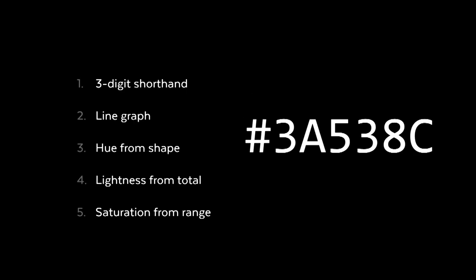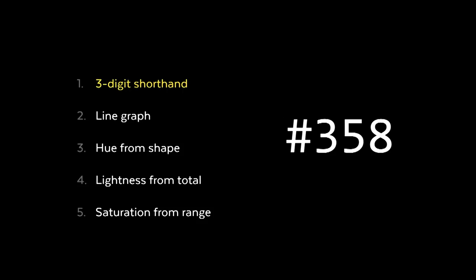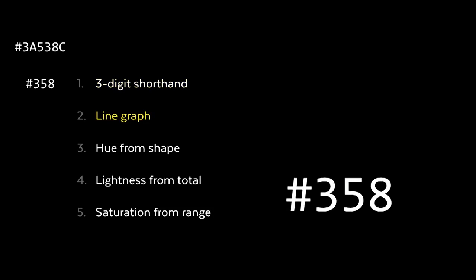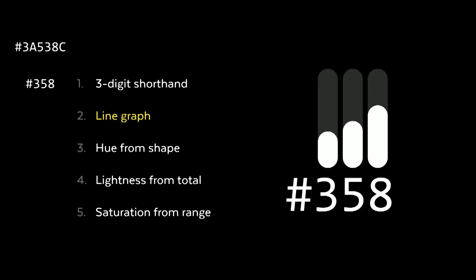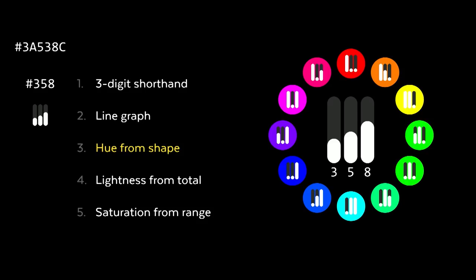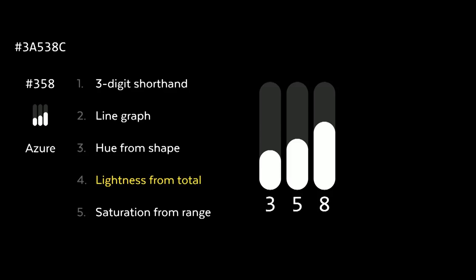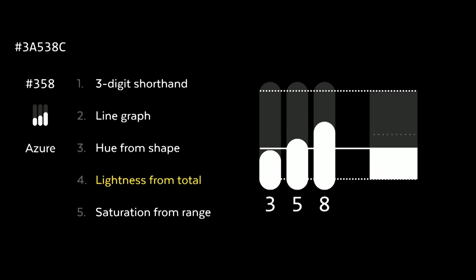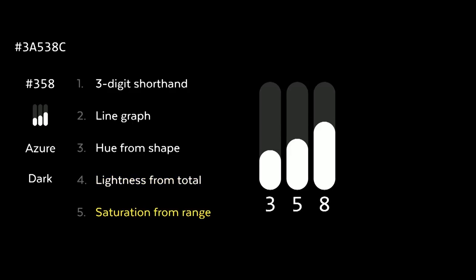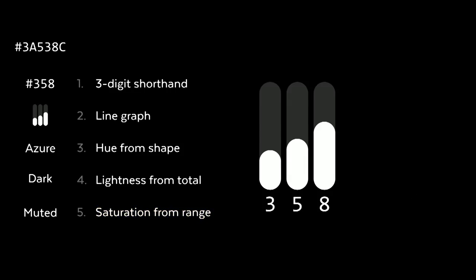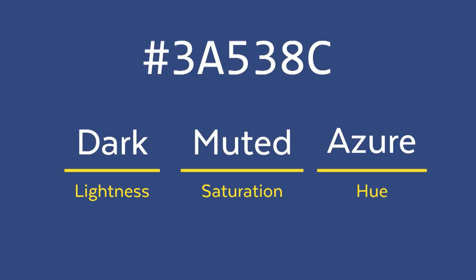Okay, think fast. 3A538C. Let's do the process — we've got five steps. Step one: get the shorthand. We remove every other character and get 3, 5, 8. Now the line graph: 3 is low, 5 comes a little higher, 8 is in the middle. Figure out the hue from the shape: low R, middle G, high B — that matches up with the hue of Azure. Lightness: 3, 5, 8 — those are low to medium numbers, so that makes for a dark color. And saturation: the range between 3 (low) and 8 (high) — the difference is there, but it's not a lot — so saturation would be muted. So 3A538C is dark, muted Azure.